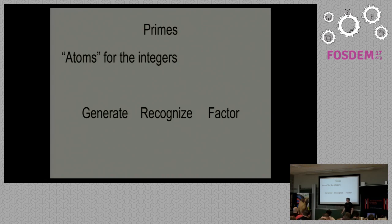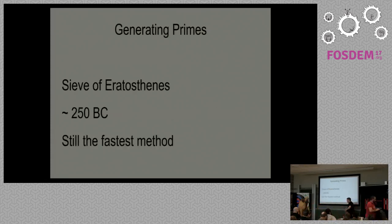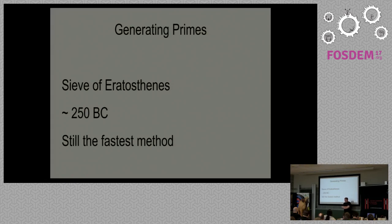There are three things we generally want to do: generate primes, recognize primes, and factor integers. The usual way of generating primes is the Sieve of Eratosthenes, who wrote about this around 250 BC. He was the chief librarian of Alexandria and contributed to many fields. Unfortunately, all his works were lost when the library burned, but many people wrote about the things he did, including this algorithm.